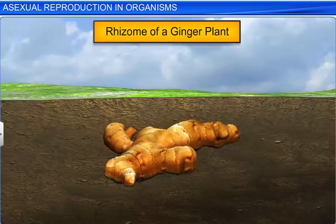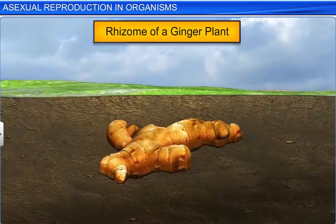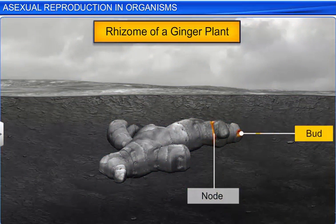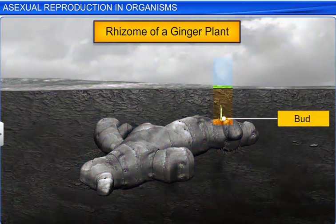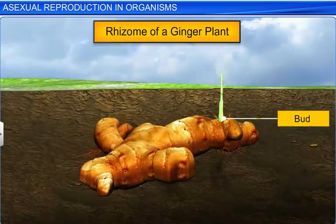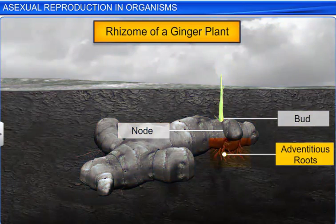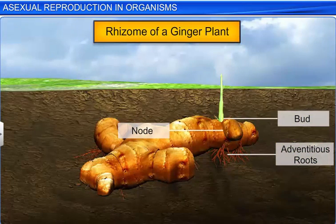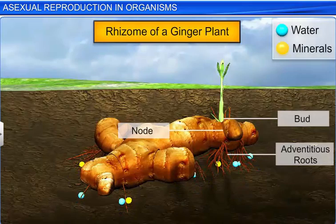Whereas in a ginger plant, modified stems or rhizomes having nodes and buds act as a means of vegetative propagation. While the buds develop into a new ginger plant, the nodes of the rhizome give way to adventitious roots, which help in the absorption of water and minerals from the soil.